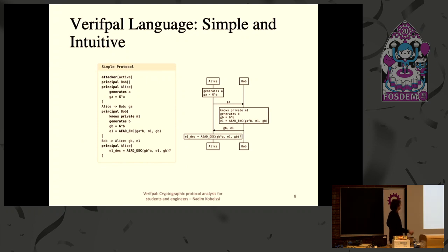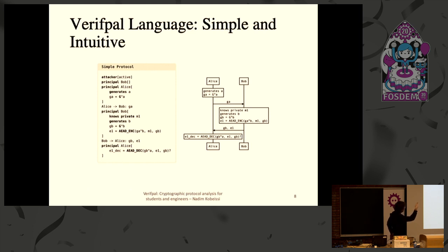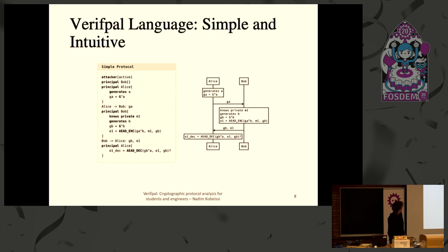Here's what the language looks like. There's a really simple example on the left, and on the right there's a graphic representing what it's like over the network. We declare an active attacker, then declare the principals Bob and Alice. Alice generates a private key, calculates a public key, sends the public key to Bob. Then Bob generates a public key and encrypts a message to Alice based on his private key and Alice's public key. This is the most simple possible Diffie-Hellman protocol. Modeling this in other tools can be way bigger — something modeled in VerifPal in 100 lines might take 500 or 300 lines in other tools.